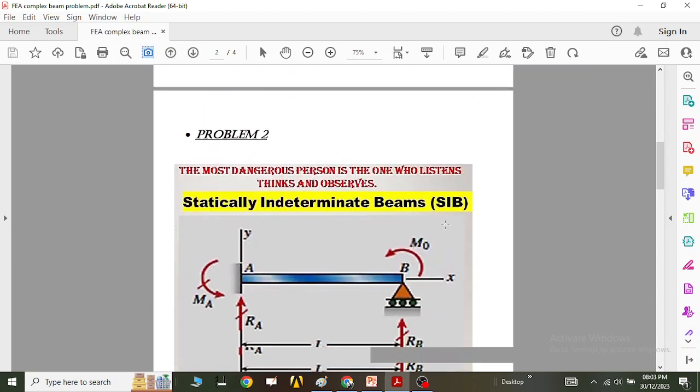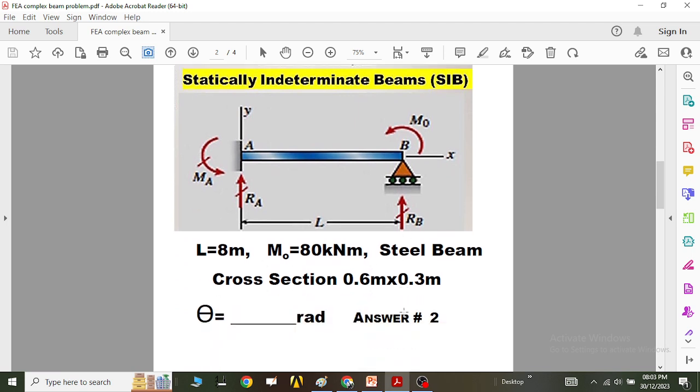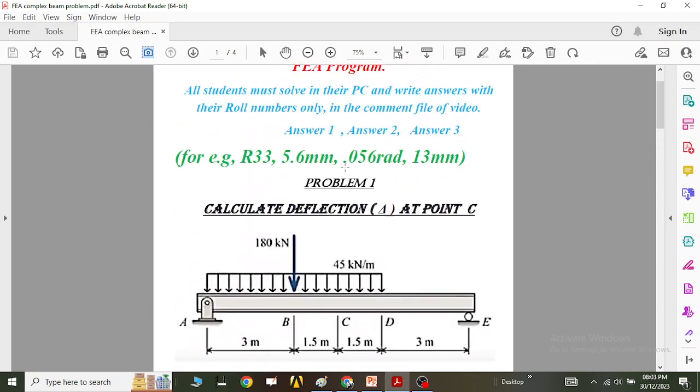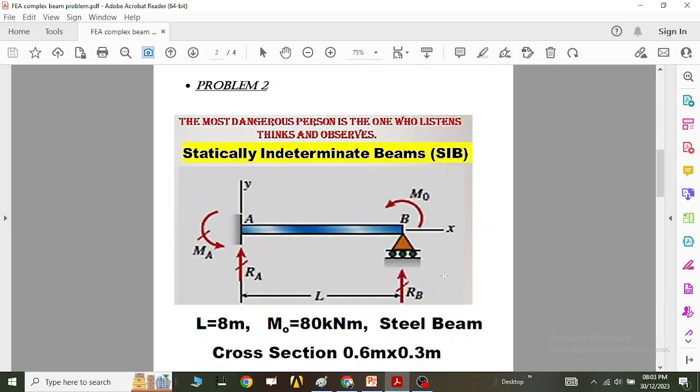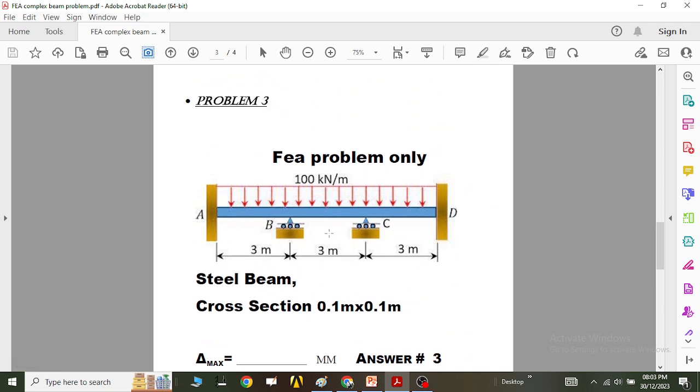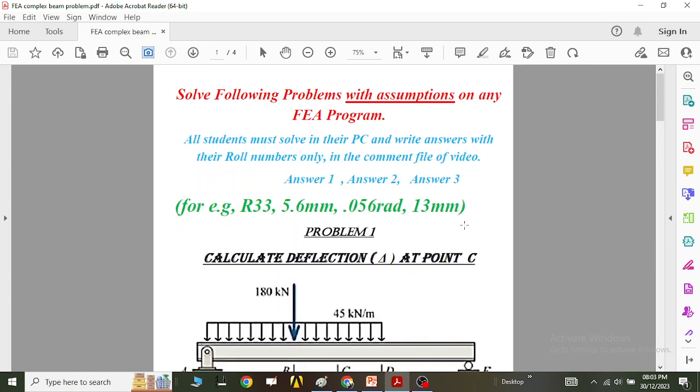Then you go to problem number 2 and you basically solve this problem and you get the slope of this problem as 0.56 radians. So you will write this answer as 0.56 radians, and you solve, go to the third problem and you get the deflection as a value of say 13 mm.